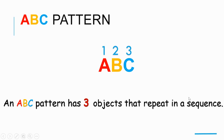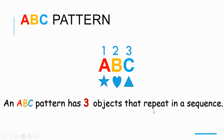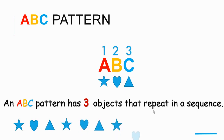Our three objects today are going to be shapes again. This time we're going to use A — star, B — heart, and C — triangle. Let's do our pattern: star, heart, triangle, star, heart, triangle, star, heart, triangle, star, heart. And what shape comes next? It is a triangle.